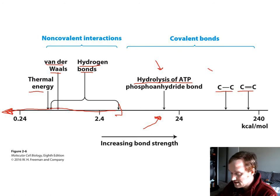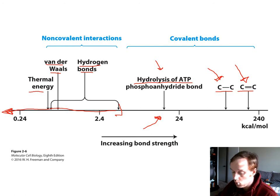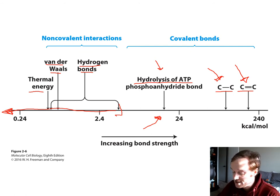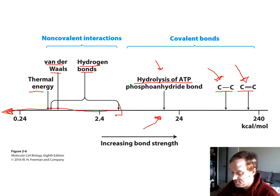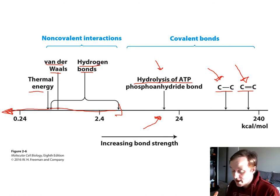These bonds can also be used for energy production within the cell. When it's possible to regenerate ATP or reform those phosphoanhydride bonds by breaking down carbon-carbon bonds, that's where the metabolism of carbohydrates and fats via glycolysis occurs and will release more energy to replenish ATP.